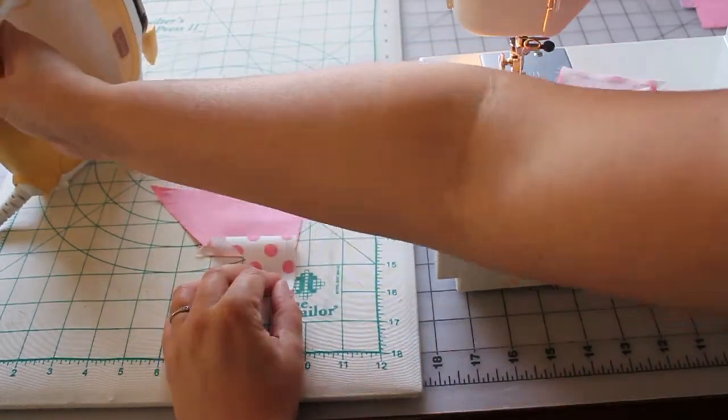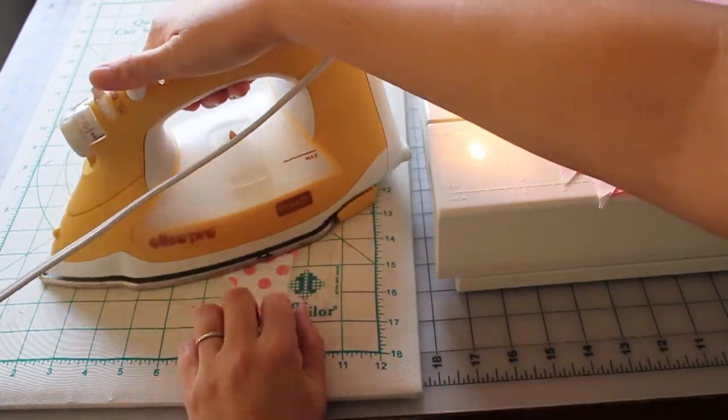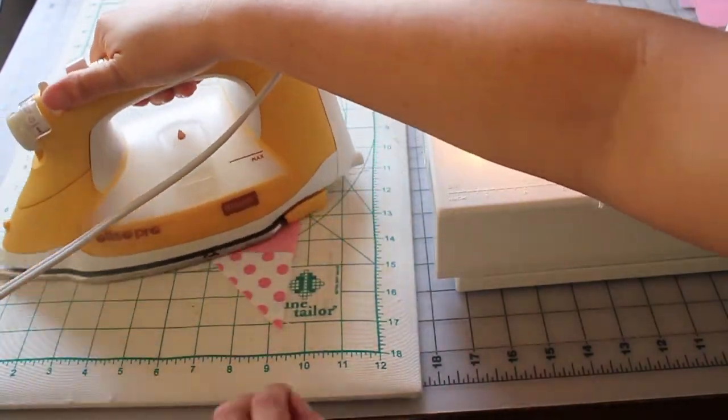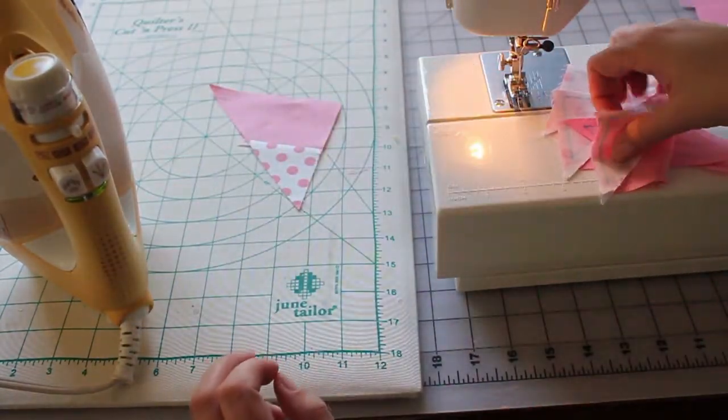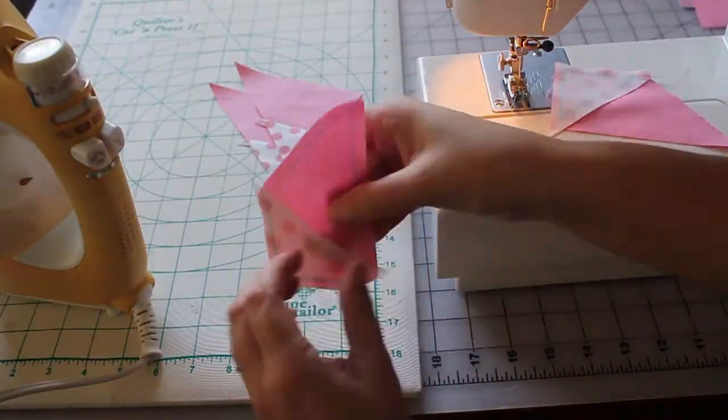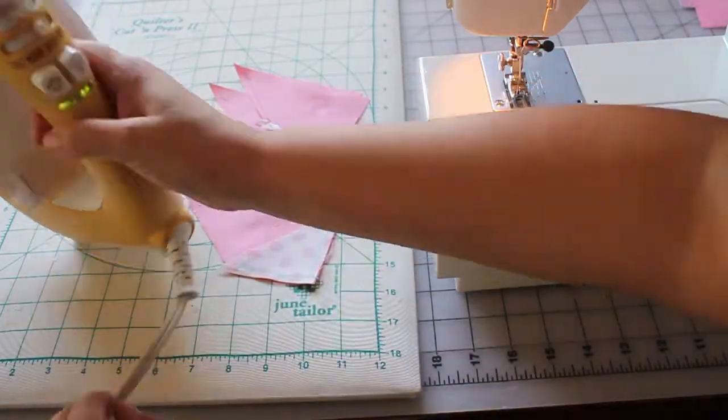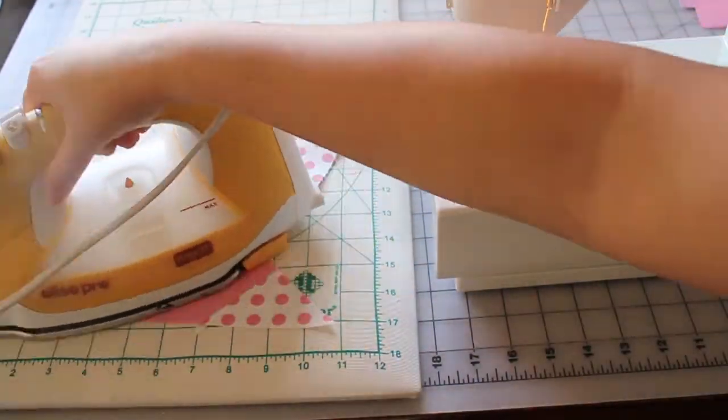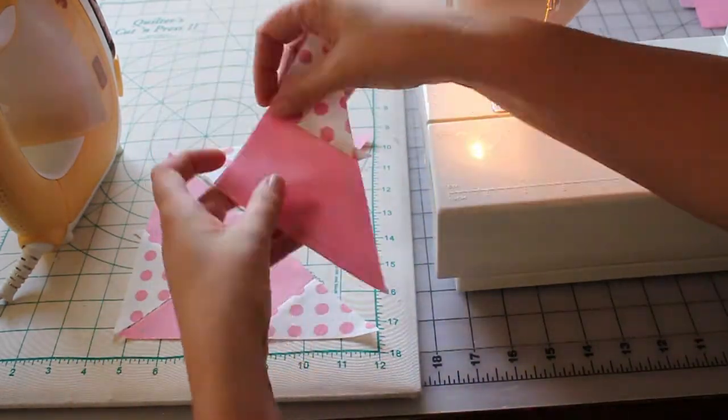And now these can all be pressed. The easiest way to press these, even though the white is my light, is going to be press it towards the triangle. So just like that. And repeat.